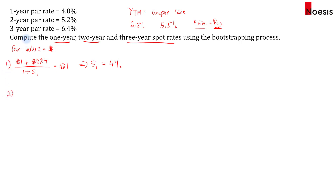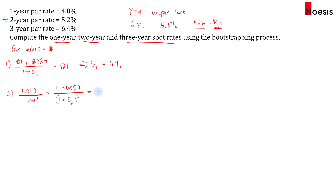For calculating the two-year spot rate, we start with the two-year par rate: a two-year bond with YTM of 5.2% and coupon of 5.2%. The coupon is 5.2% times one dollar, which is 0.052. We discount this coupon using the one-year spot rate of 4%, and in year two we have the par value plus coupon discounted by the two-year spot rate to the power of two. Setting the price equal to par (one dollar), we find that S₂, the two-year spot rate, equals 5.2316%.